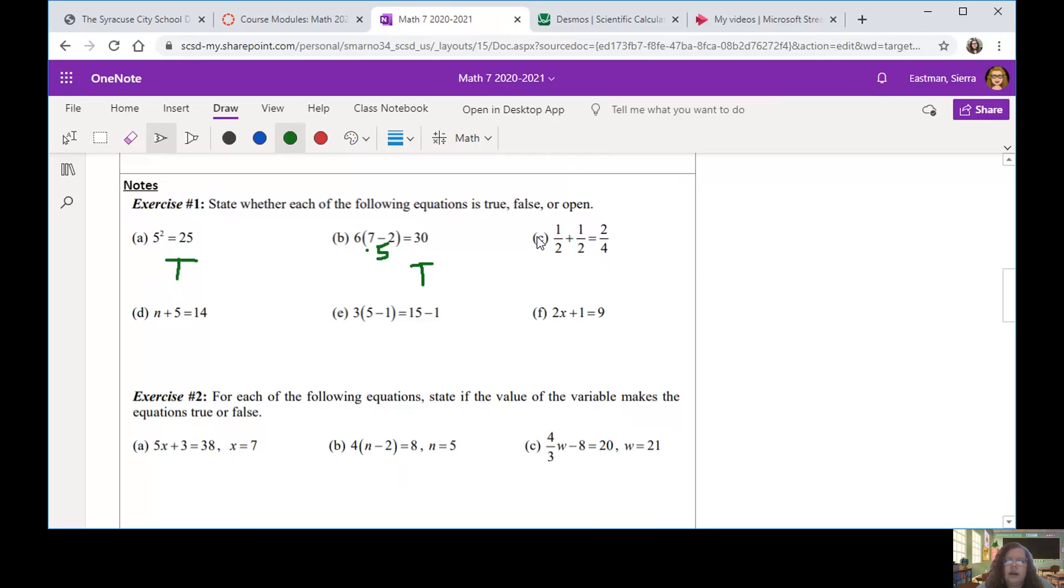Question C here gets a little bit tricky because we've got some fractions involved. But one half plus another one half should now equal two over two. Now we have a whole, a whole one. Two divided by two is one. But they're saying that it's equal to two over four, and we know that that is not a whole. That's another half. So these are actually not going to be equal. So our equation is false. When I move down to question D, we have N plus five equals 14. So here's where it gets even trickier. When we have a variable that does not have a given value, they don't say when or if N equals some number, that will automatically be open.